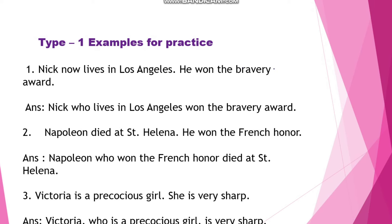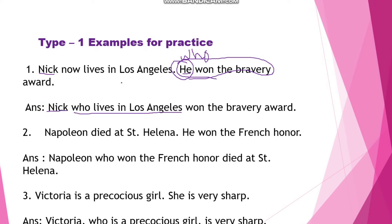Here is a Type 1 example for practice: 'Nick now lives in Los Angeles. He won the bravery award.' The subjects Nick and he are both the same, so the second subject is rounded off and we use the relative clause 'who won the bravery award', moved next to the subject of the first sentence. Answer: 'Nick who lives in Los Angeles won the bravery award.'